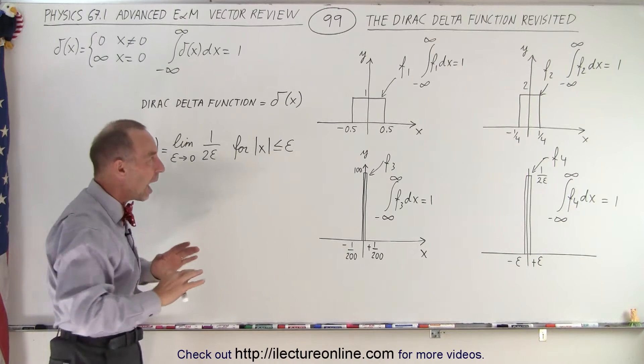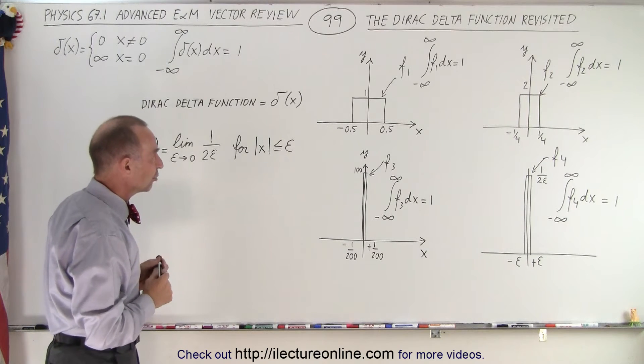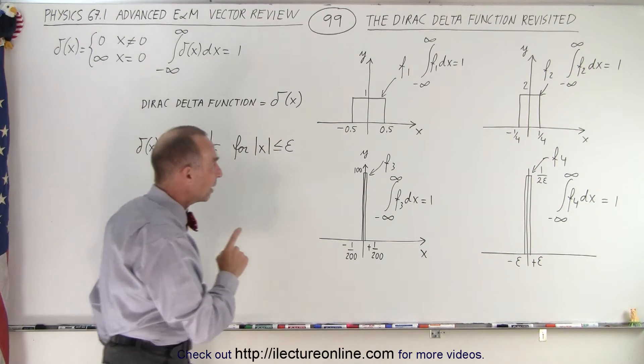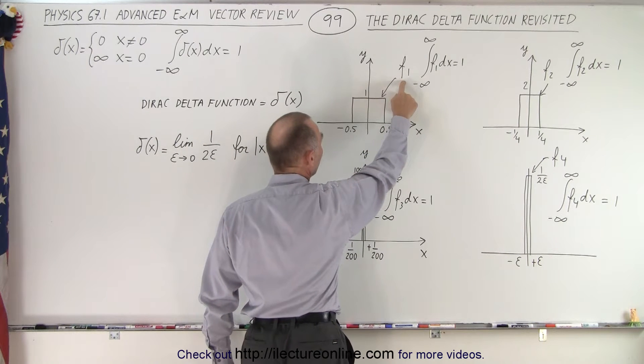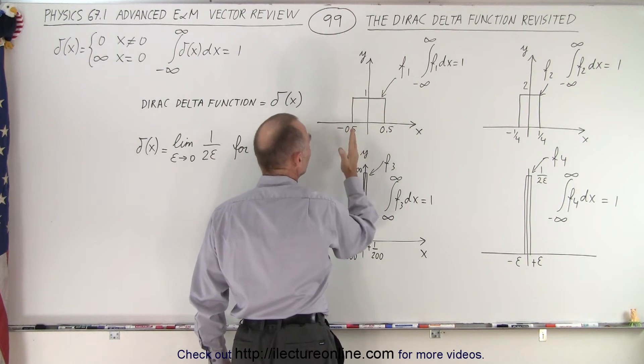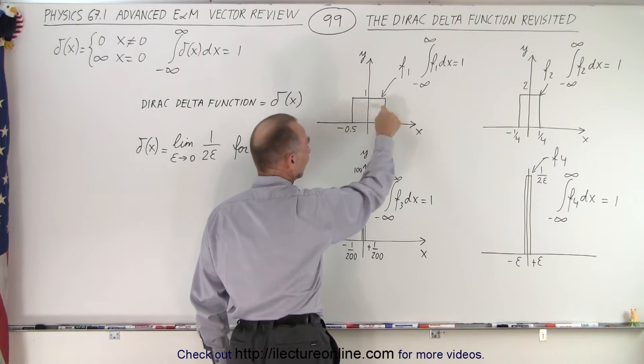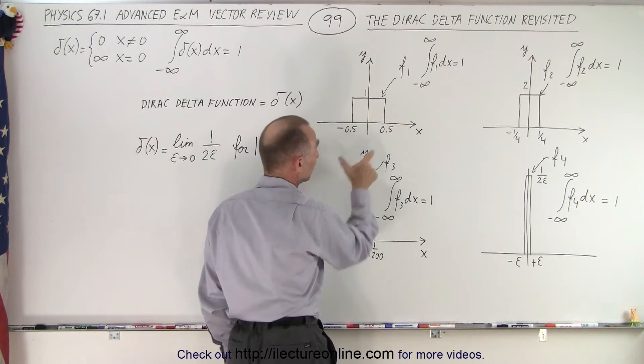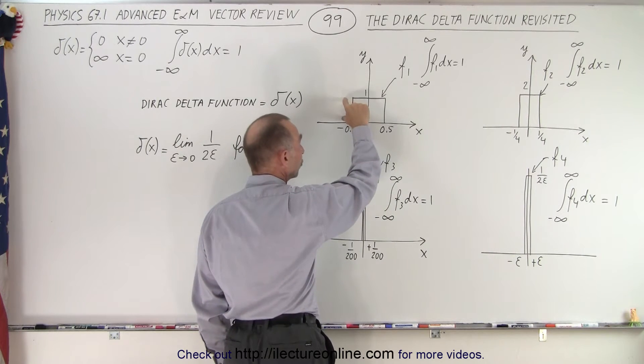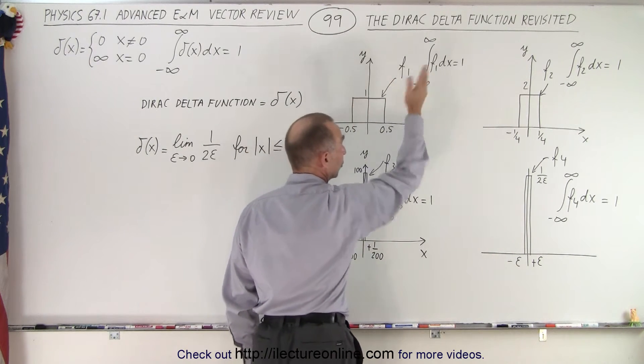But let's take another look at how we can get a feel for that function. Let's say we have a function called function one that is equal to one between x equals negative 0.5 to x equals plus 0.5. Notice that the area of this is equal to 1 because the width is 1 and the height is 1, so when we integrate over that function, we do get 1.